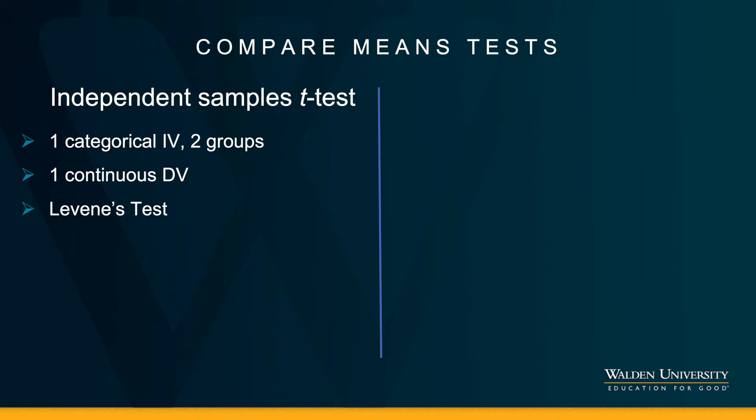If you find differences between those two groups in an independent samples t-test, then you're kind of done. You don't have to run another test. All the output that you need is ready to be interpreted. The between-group comparison tells the full story of the data.